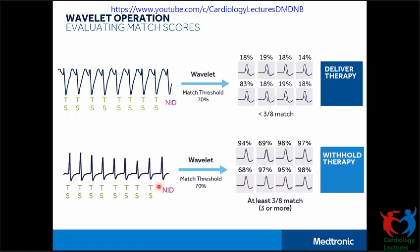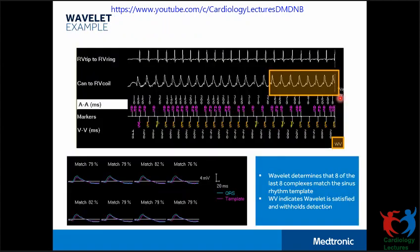On reaching the NID, it will look back at eight beats, and if it finds that at least three or more of the eight beats show a match criteria, it will withhold the therapy and classify the rhythm as SVT. If it finds that fewer than three of the eight beats match, it will go ahead and give therapy. In this example, all eight beats show match scores above 70 percent, so the device withholds detection and marks it as 'WV,' indicating therapy was withheld because of the Wavelet feature.